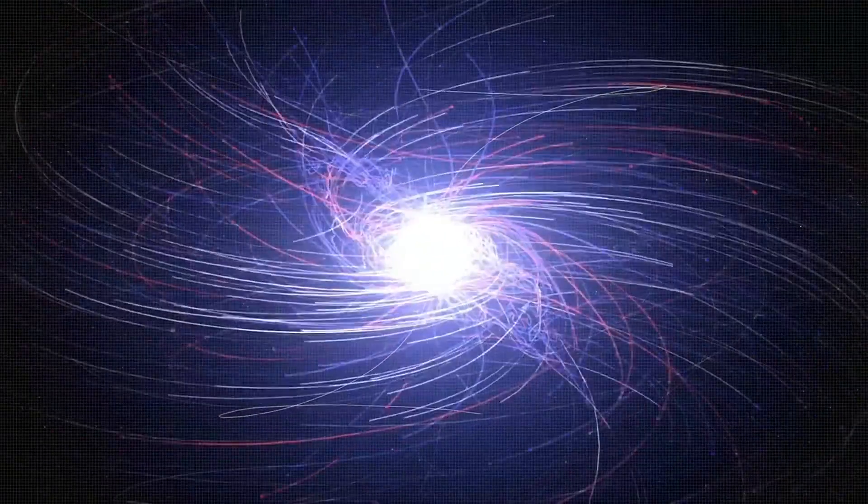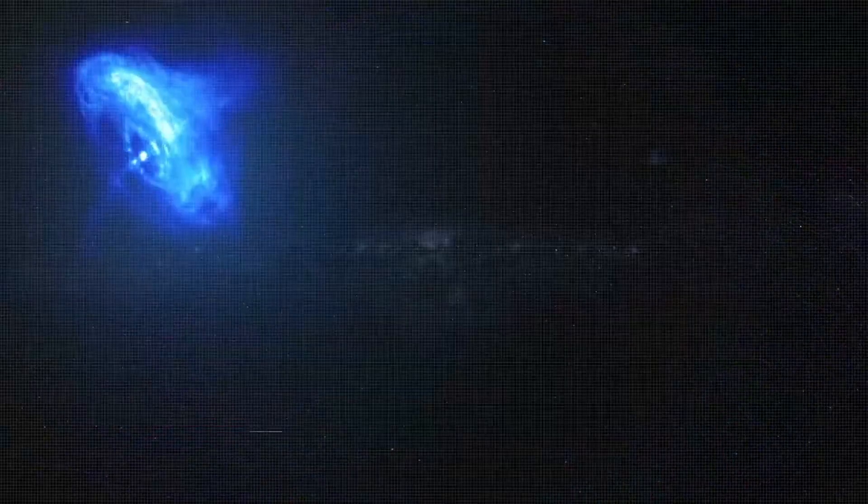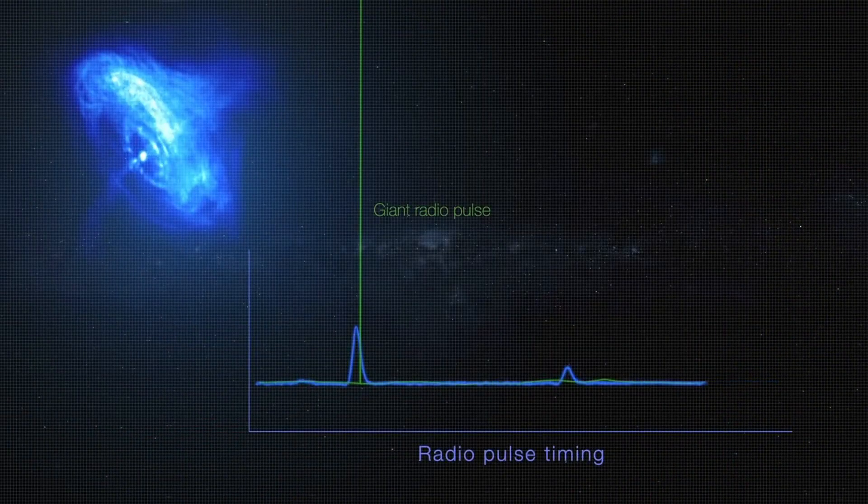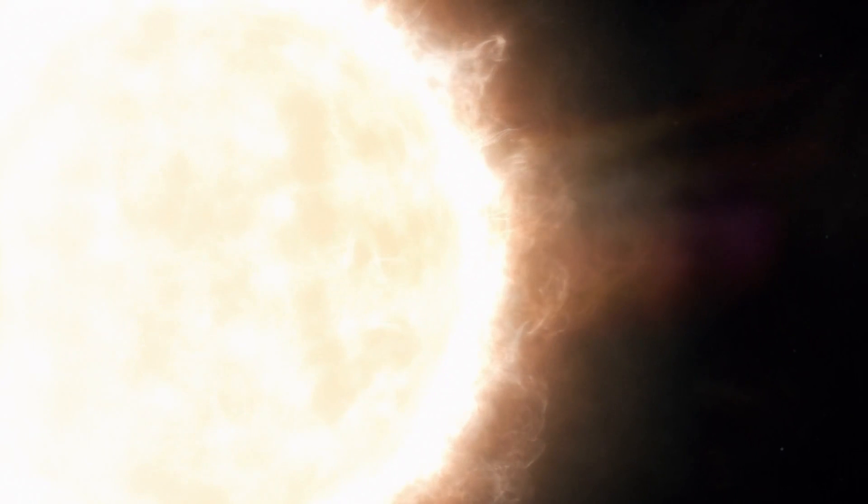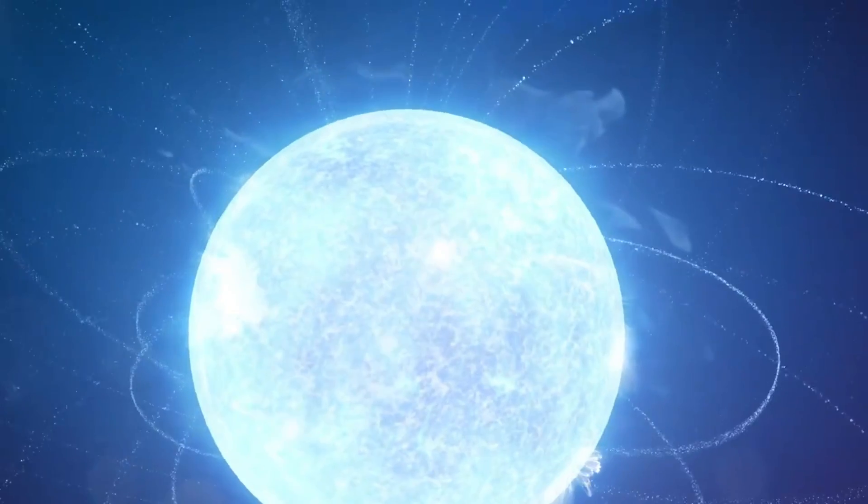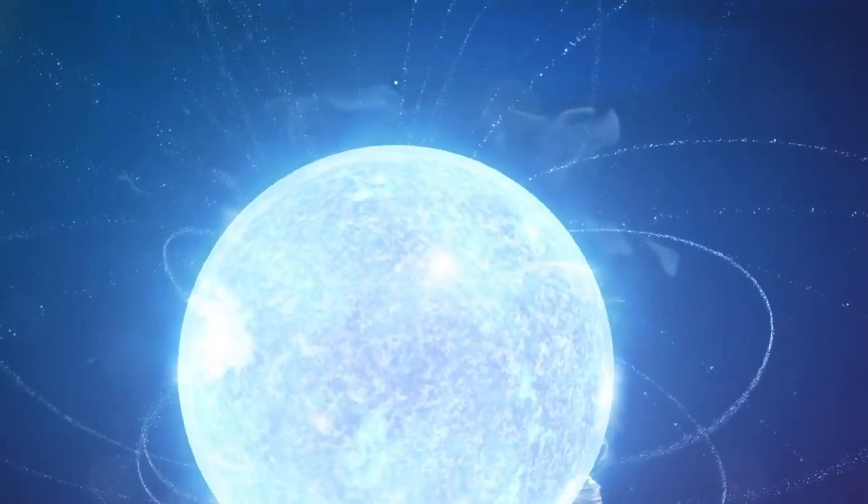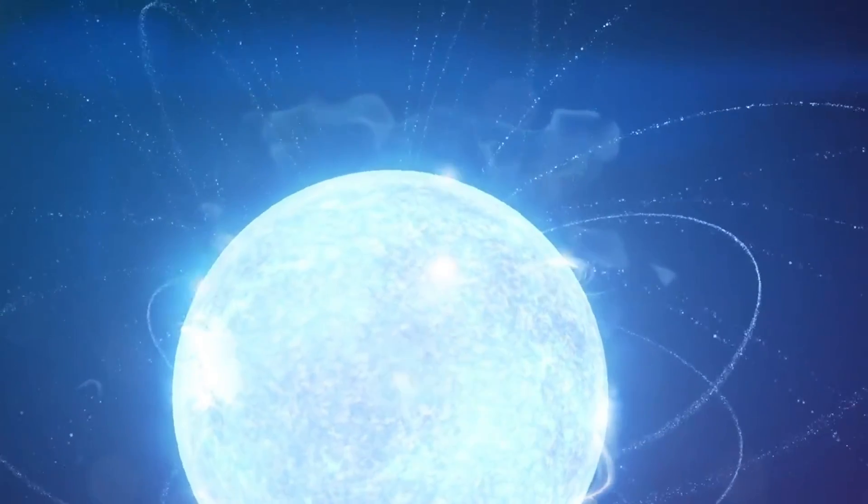As of now, attention remains focused on the equatorial coronal hole and the series of plasma filaments crossing the solar disk. These features represent potential sources of moderate but sustained solar wind activity over the coming week. Monitoring them will help determine whether the current lull in flare activity persists or gives way to renewed eruptions. Every event contributes data that refine the models of solar dynamics and improve prediction accuracy for future cycles.